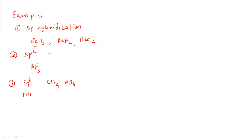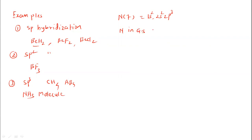Let us take another example of SP3 hybridization: the NH3 molecule. In NH3, let us find out the hybridization of the central nitrogen atom. Nitrogen has atomic number 7 with electronic configuration 1s², 2s², 2p³. In the ground state, the valence shell has the 2s atomic orbital and 2p atomic orbital — two electrons in 2s and three electrons in 2p.